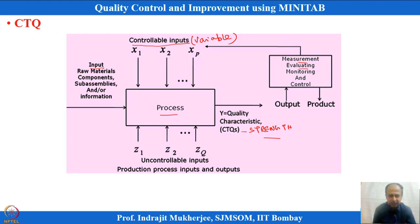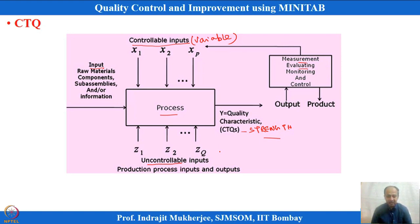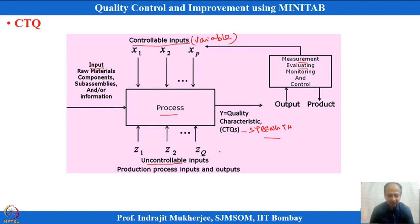There are controllable variables — in our hand, operated by the machine operator — and uncontrollable variables, which are uneconomical to control, or unknown variables we cannot locate. These can include supply-to-supply variation in raw material. There may be hundreds of variables with minor effects from previous processes that we cannot locate. These are known as noise variables.